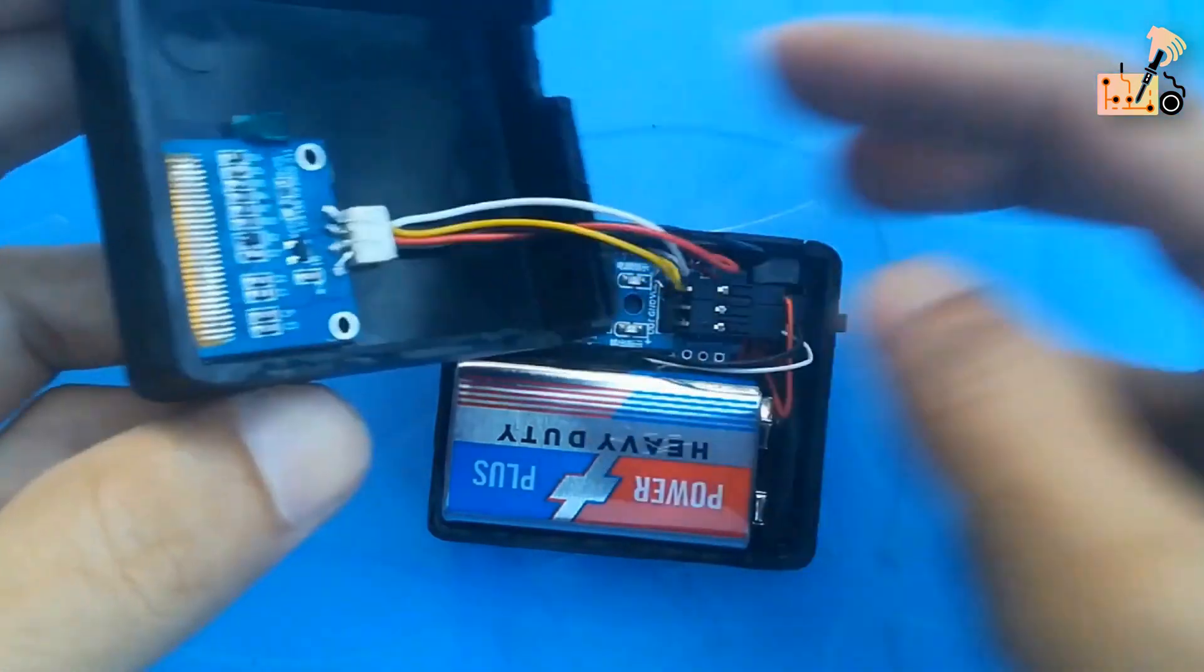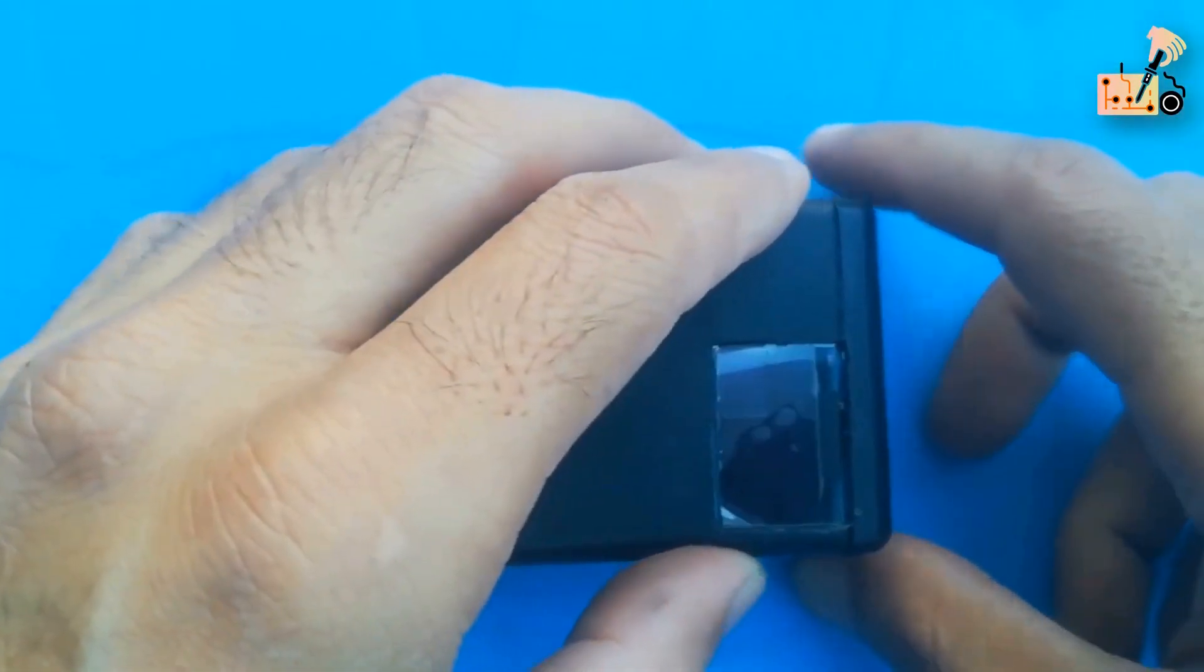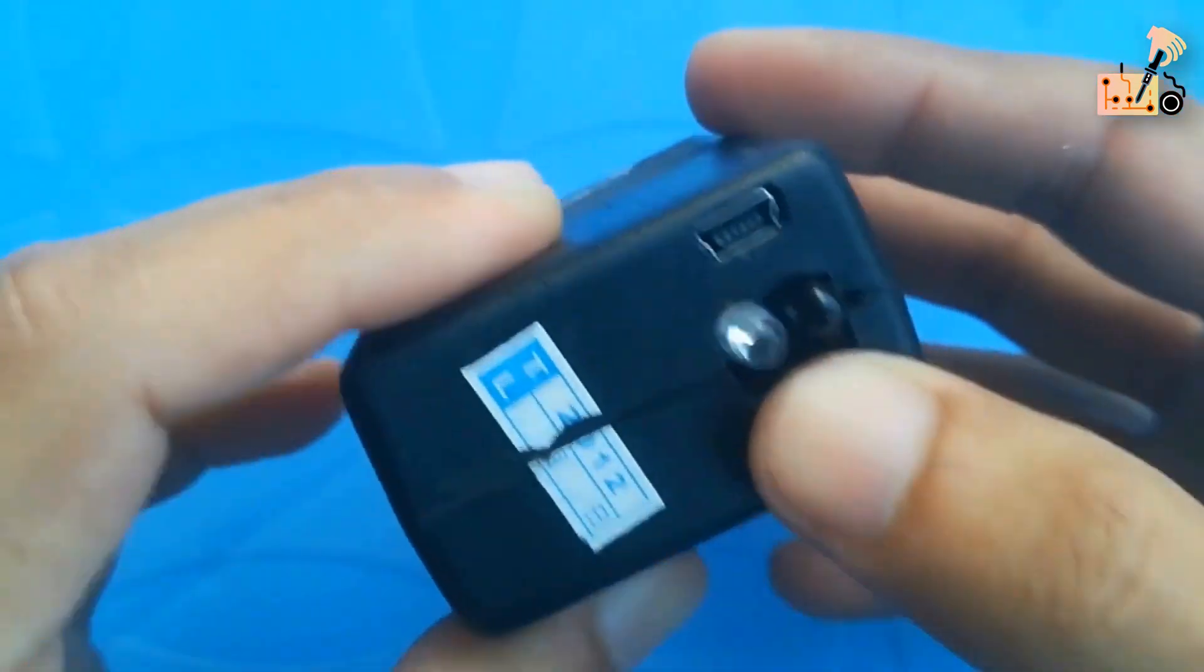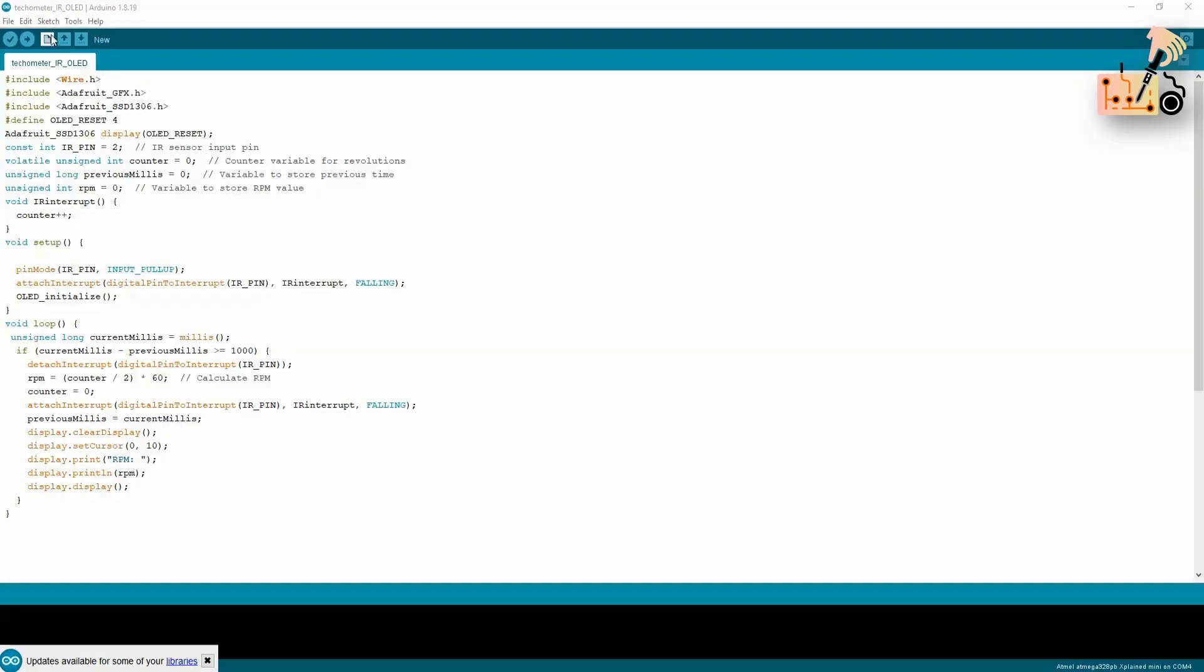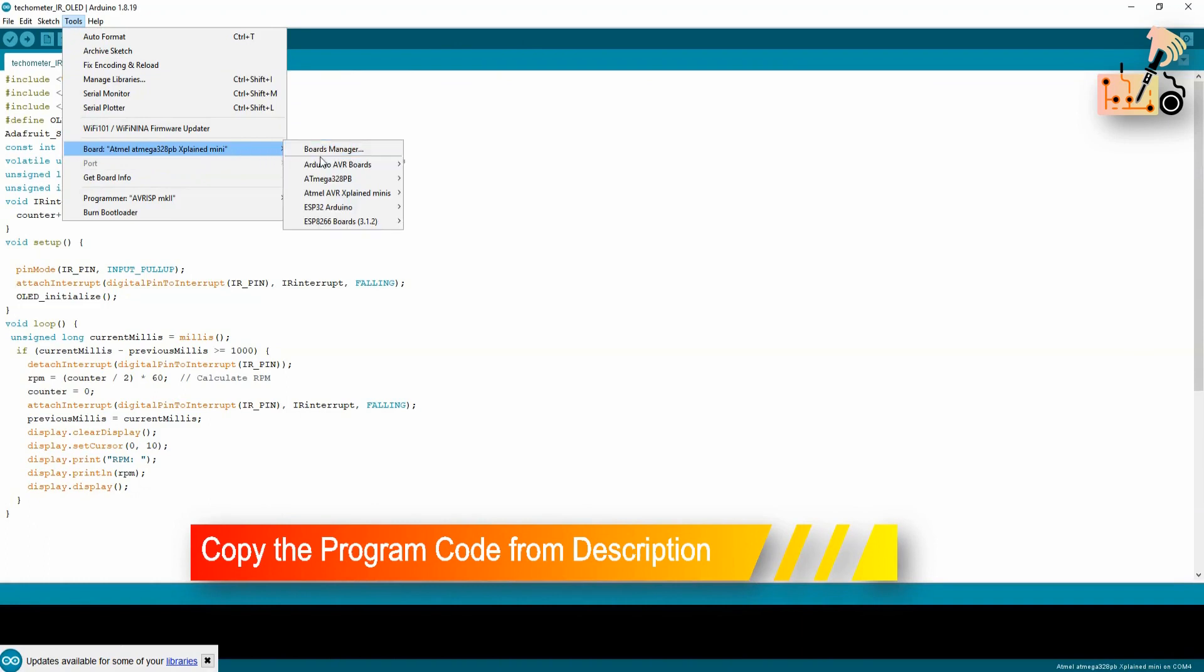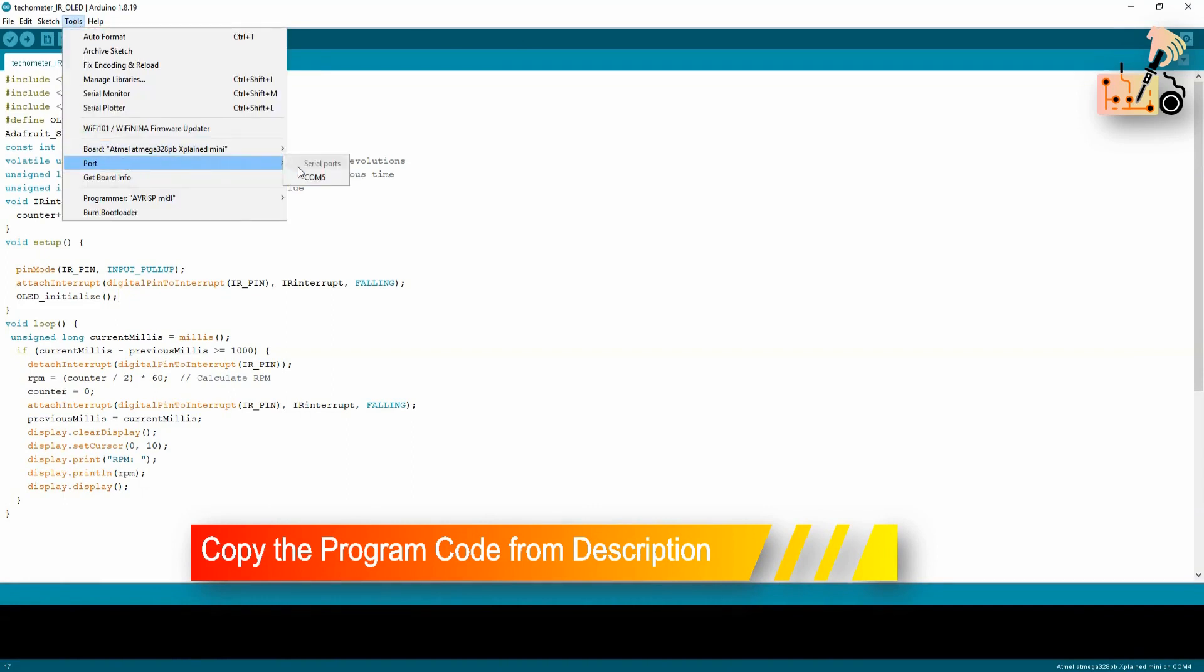Upload the Arduino code to complete the project after all components are set up. Download the tachometer code directly from the description section and carefully paste it into your Arduino module to bring your project to life.